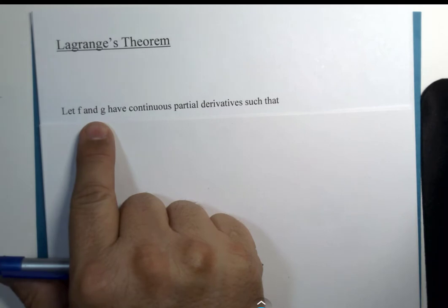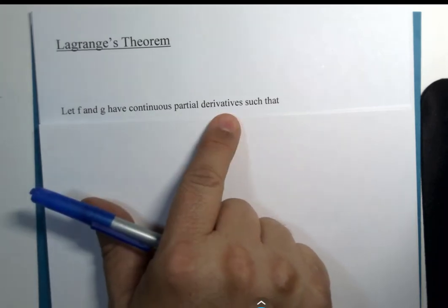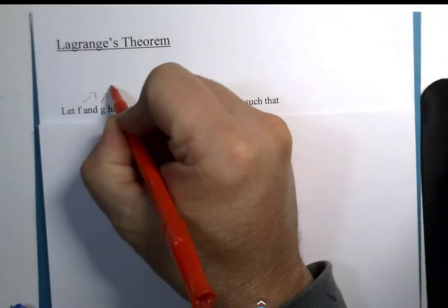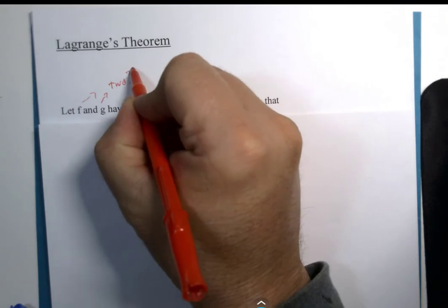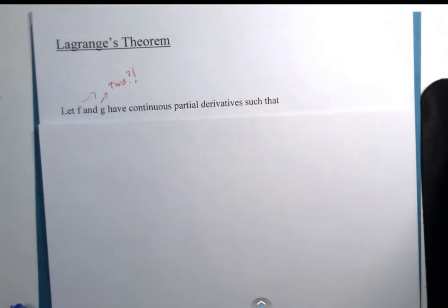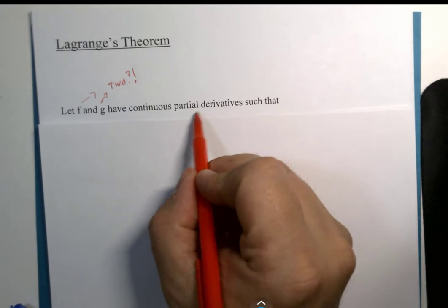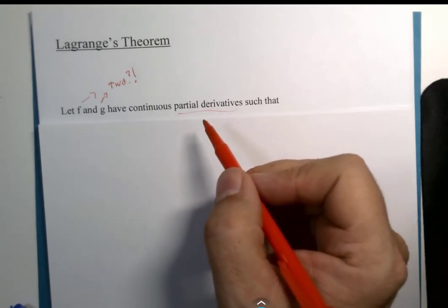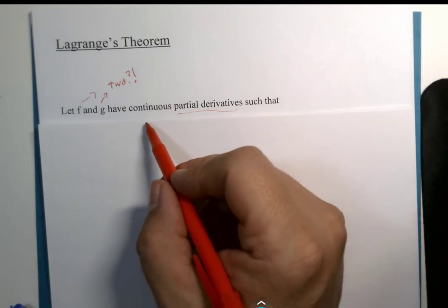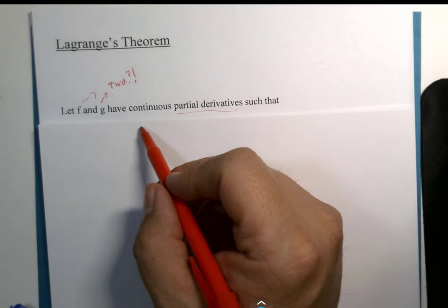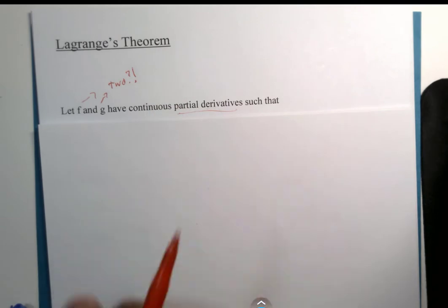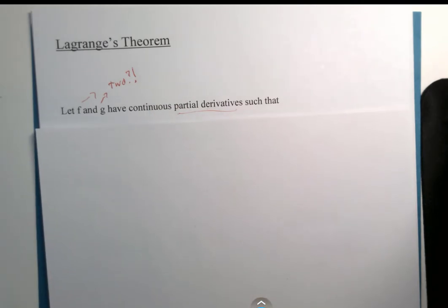Let F and G have continuous partial derivatives. There are two functions, and they both have multiple variables because there are partial derivatives. Continuous partial derivatives means that the derivative doesn't have any holes in it — it could have a sharp turn, but not a hole. So we've got two functions with the ability to do partial derivatives.